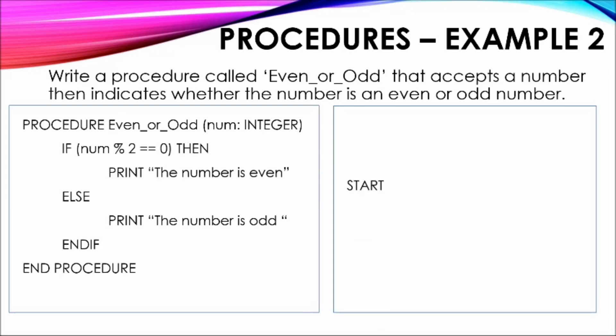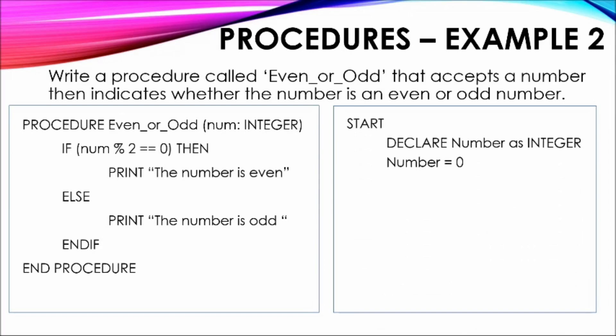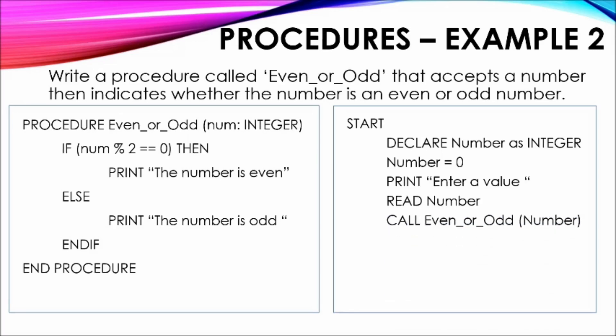The main program shows the declaration of the variable number as integer. Note that items passed to the procedure are generally prompted and accepted from the main program. Once this is done, the item can be transferred to the module through the module call. This is shown through the prompt and input of a number, which is then passed to the procedure EvenOrOdd. Once called, the procedure carries out its intended actions. The pseudocode then ends with the keyword STOP.